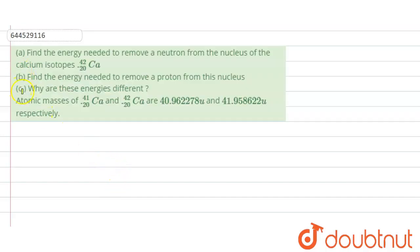Let us start with our question. There are three parts to this question and we need to answer each part. In the first part, we need to find the energy needed to remove a neutron from the nucleus of the calcium isotope Ca-42.